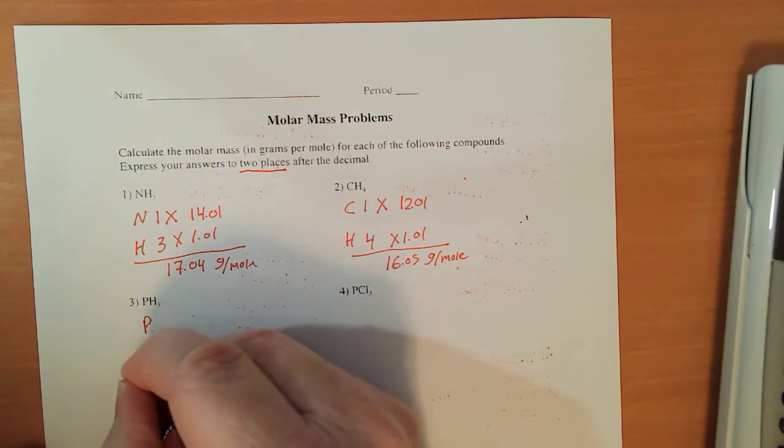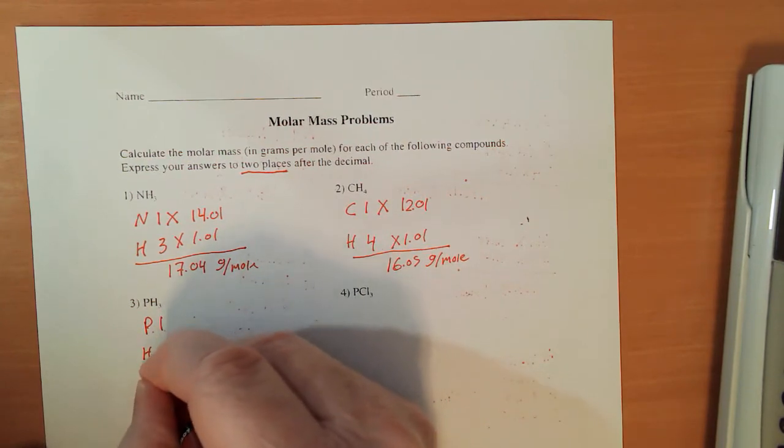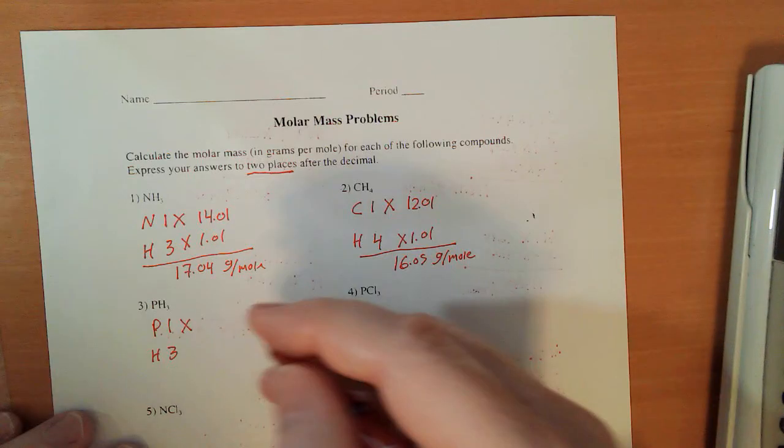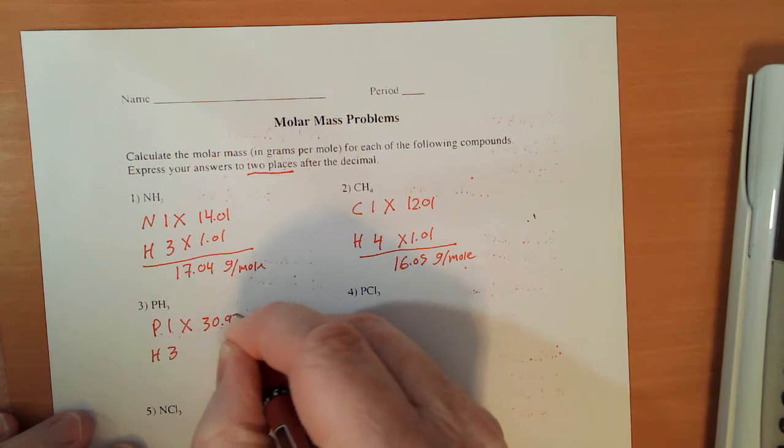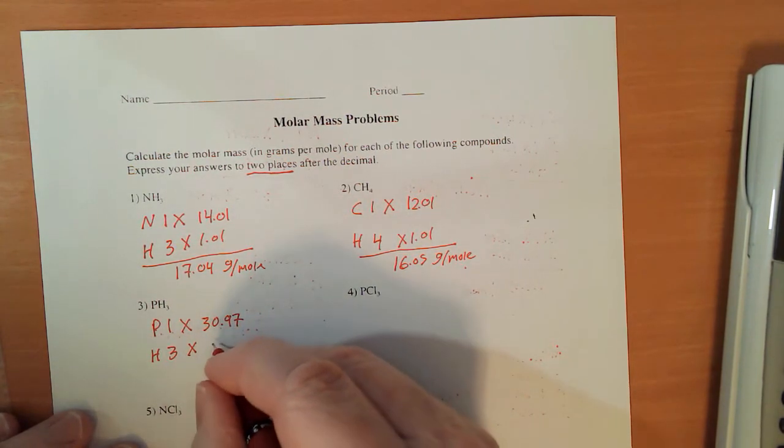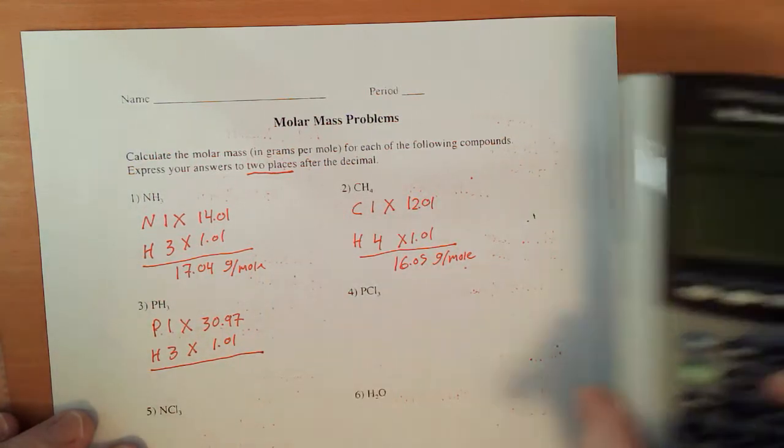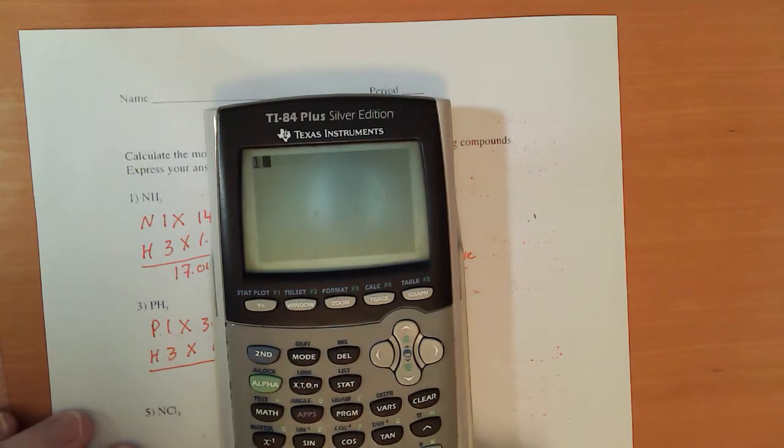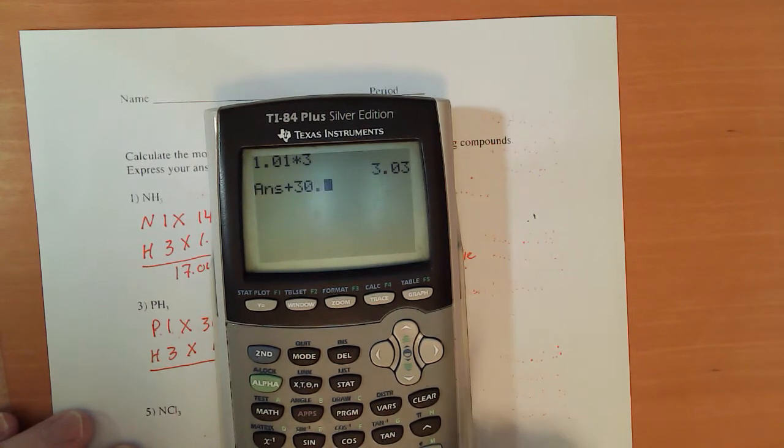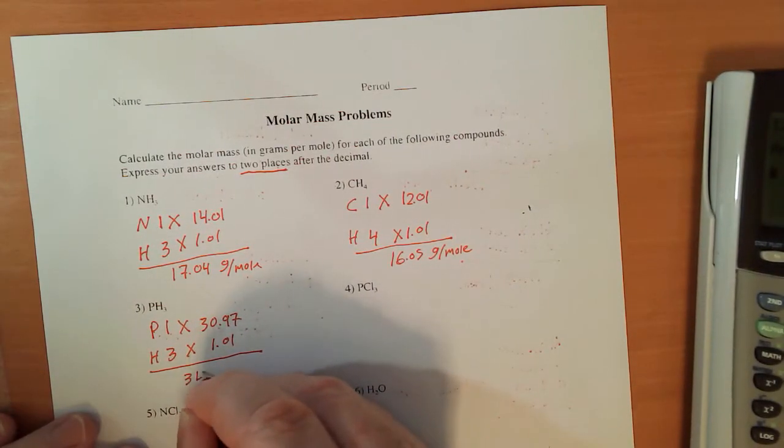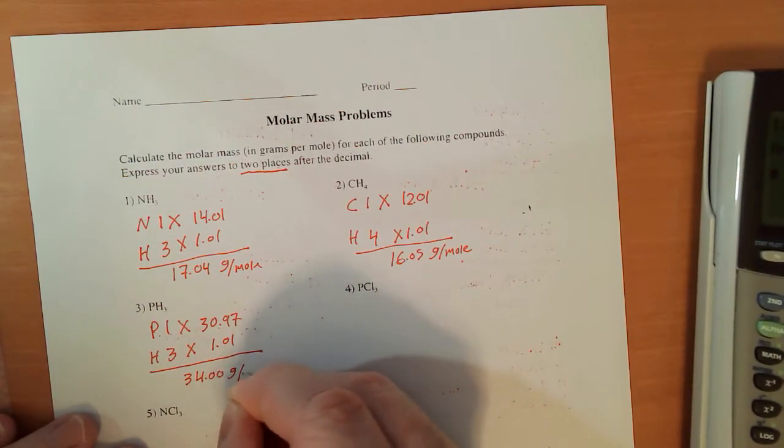For PH3, phosphorus and hydrogen, 1 and 3. The phosphorus is 30.97 and hydrogen is still 1.01. I think that's going to come out to be a very round number. 1.01 times 3 plus 30.97 and I'm getting 34.00 grams per mole.